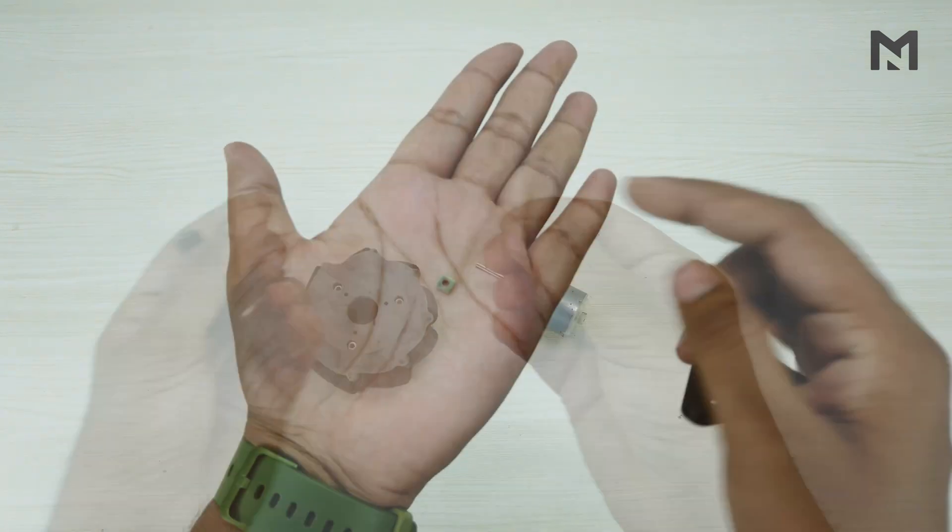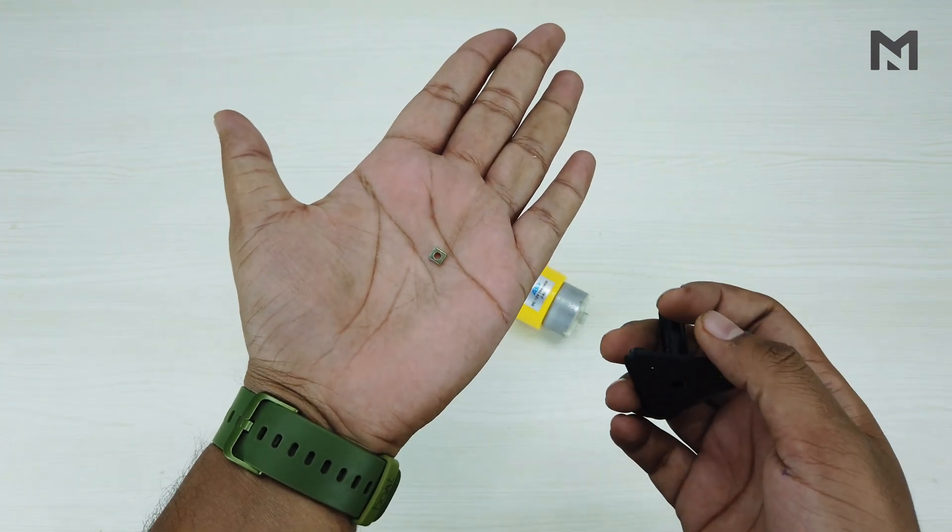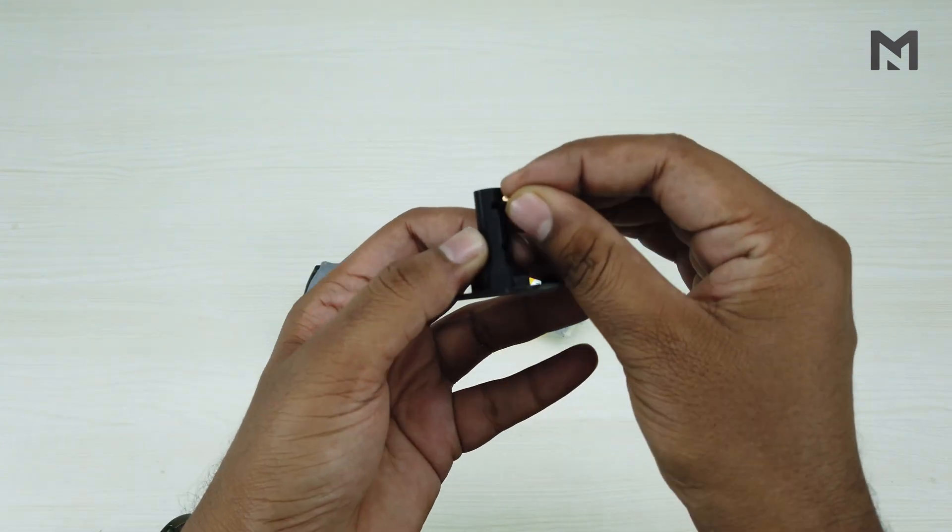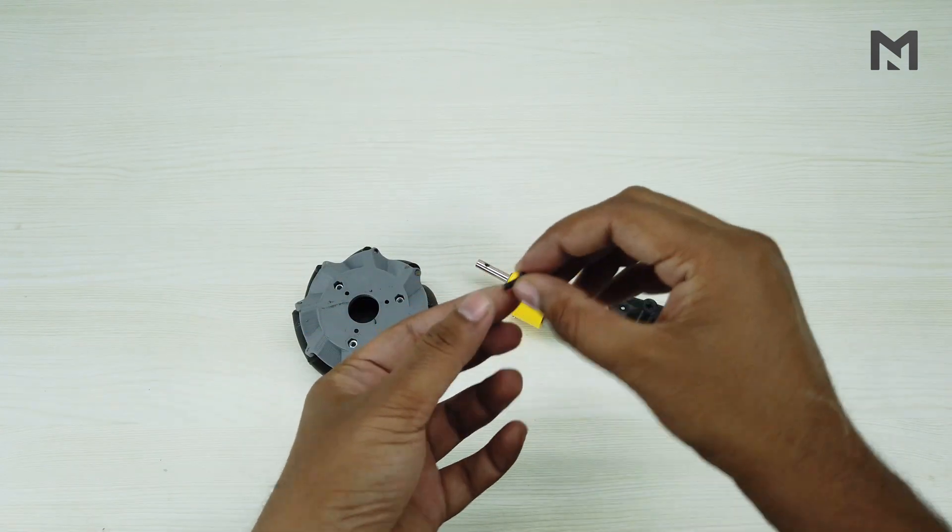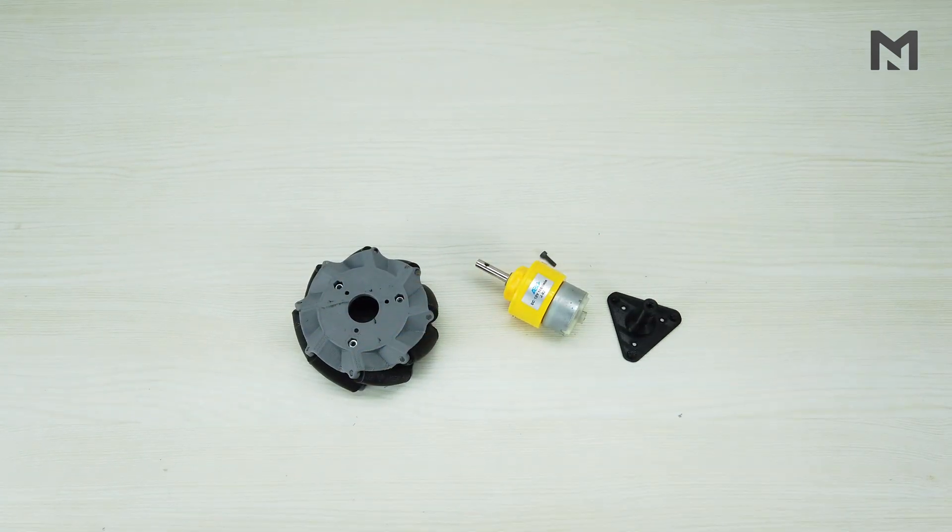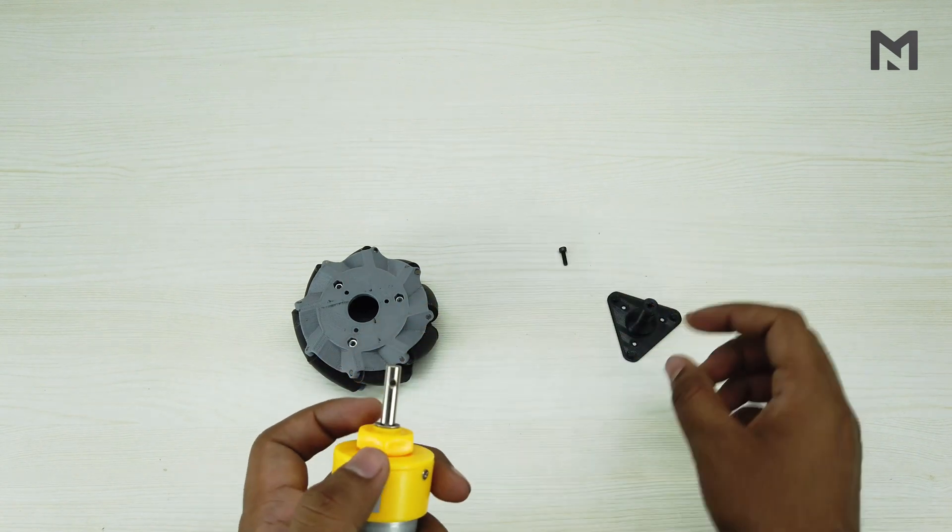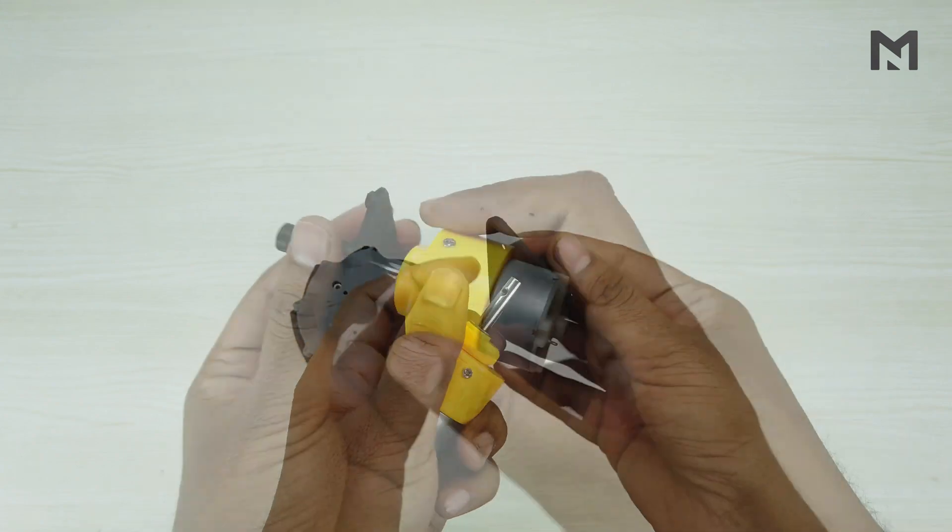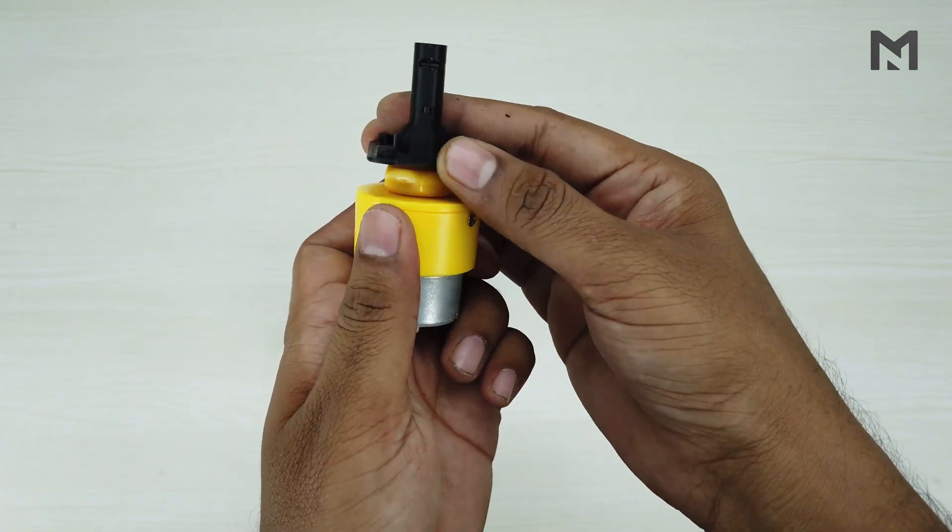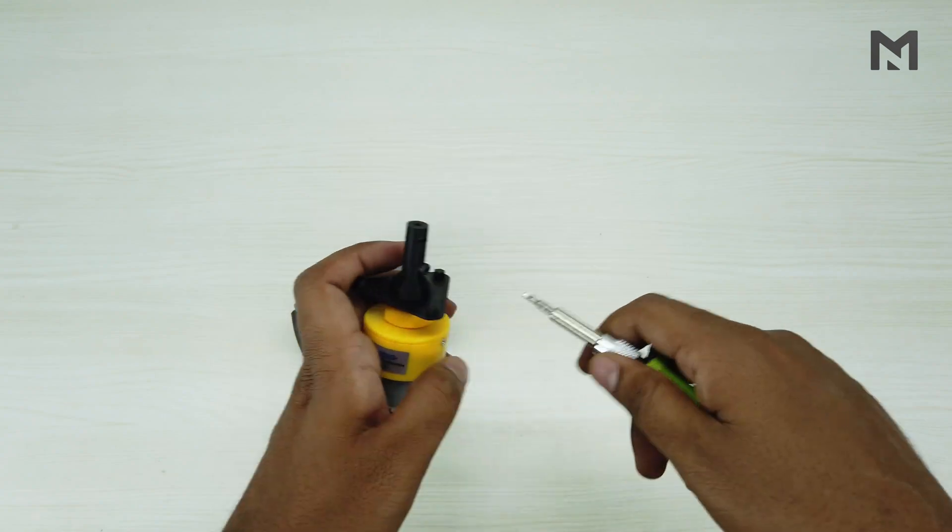The first thing we have to do is insert M3 square nut into the connector. We have to insert it in the top spacing of the connector. Now, let's use the 8mm length screw to connect the connector and the motor. The first thing to do is to attach the connector and the motor and align the holes of both the parts. As soon as the holes are aligned, then we have to insert the screw in it and tighten it.